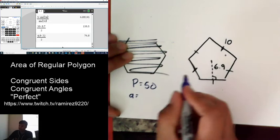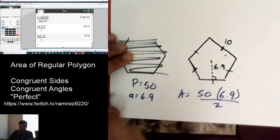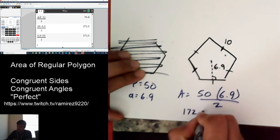And again, area is simply 50 times 6.9 divided by 2. And again, I know it's a times p divided by 2. But, you know, 2 times 3, 3 times 2 makes no difference. So when we multiply them, again, 6.9 times 50 divided by 2, you're going to get the same thing no matter what. 172.5 is the area.